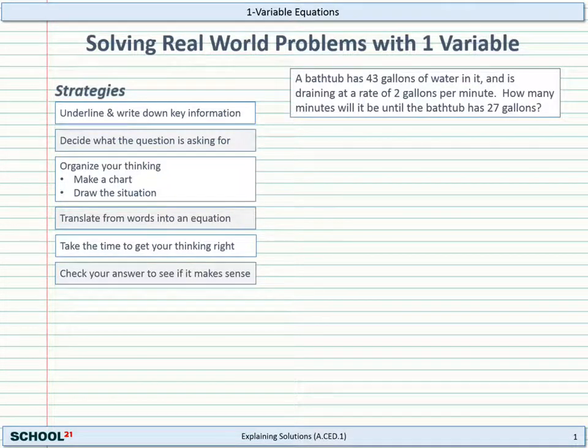Okay, let's take a look at a problem and use our strategies while we're solving this problem. A bathtub has 43 gallons of water in it and is draining at a rate of 2 gallons per minute. How many minutes will it be until the bathtub has 27 gallons? Okay, so notice how I underlined key information as I read the problem. You should do that too. Now let's try to figure out what it is that the question is asking for. Well, if we look carefully, it says how many minutes will it be until the bathtub has 27 gallons? So what we need to do is look for minutes, and if we're looking for something that's minutes, we can use whatever variable we want, but maybe we should use T for time. So that's what the question is asking for.